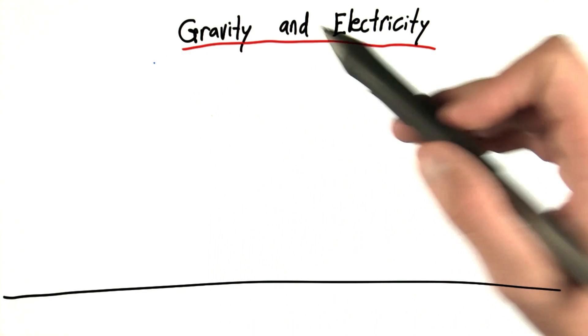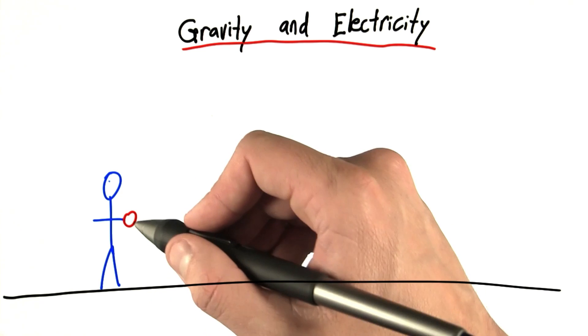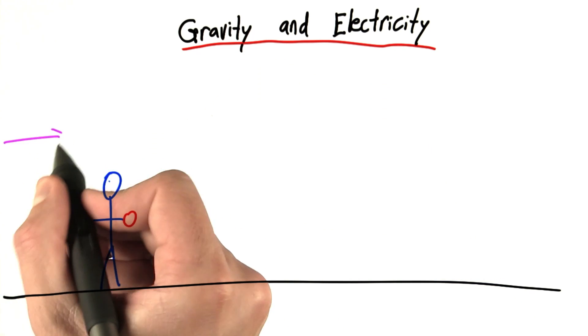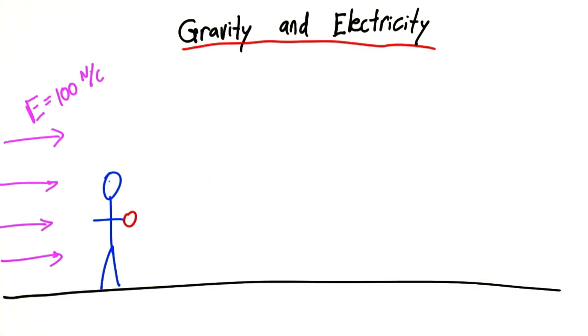So this question is about both gravity and electricity. Let's say that Benjamin Franklin is standing in a room holding an object. And this room actually has a horizontal electric field. And that electric field is equal to 100 newtons per coulomb.